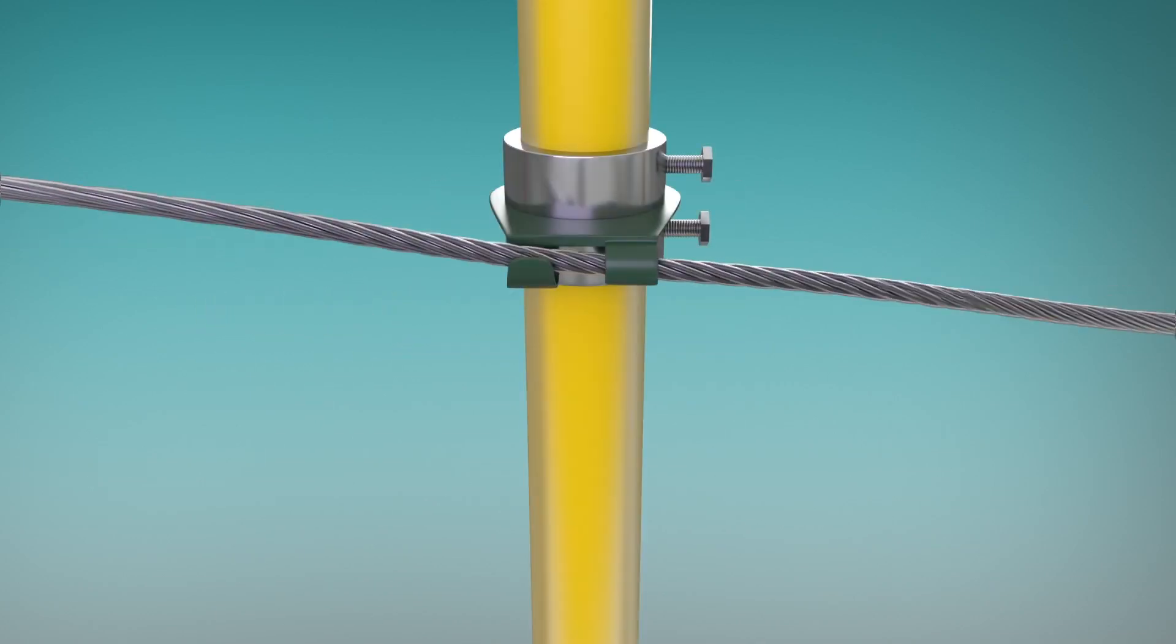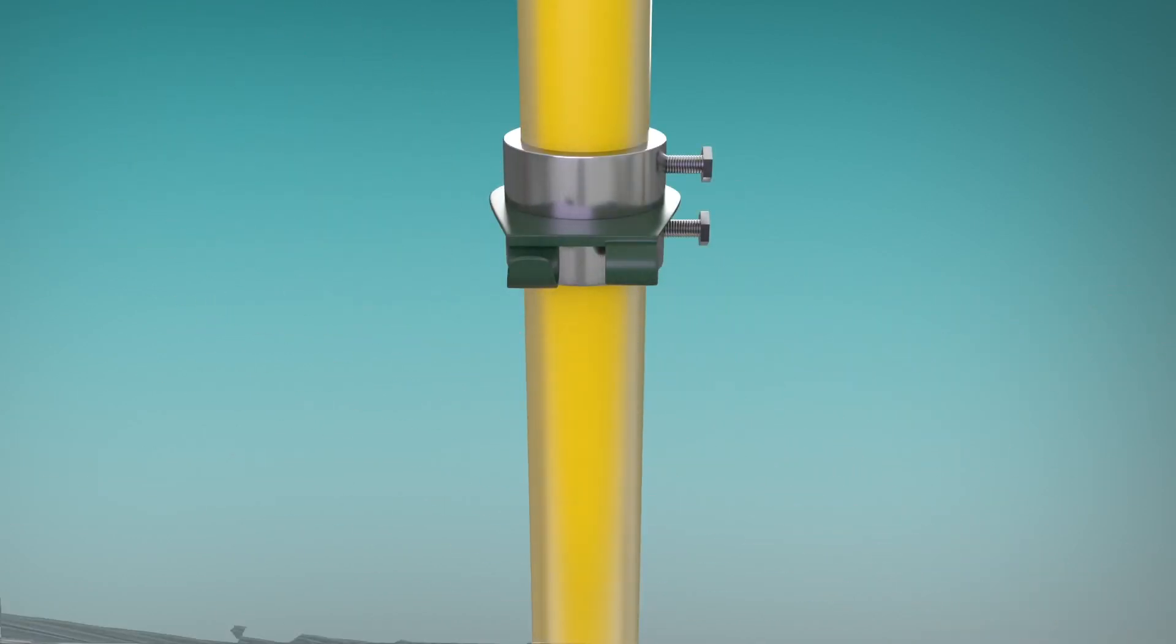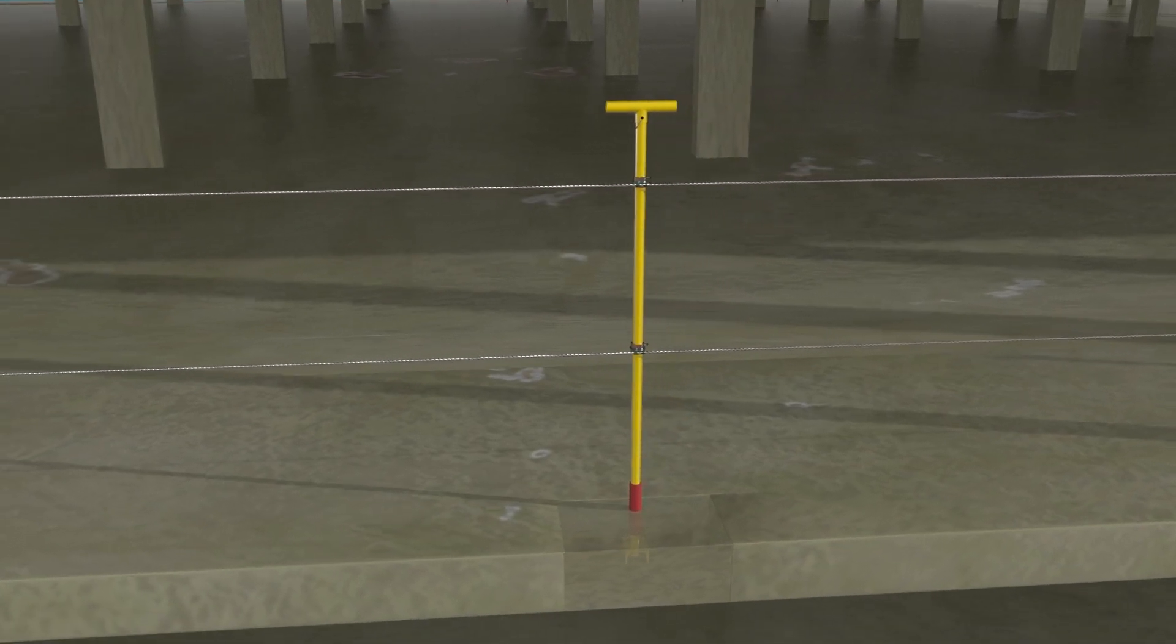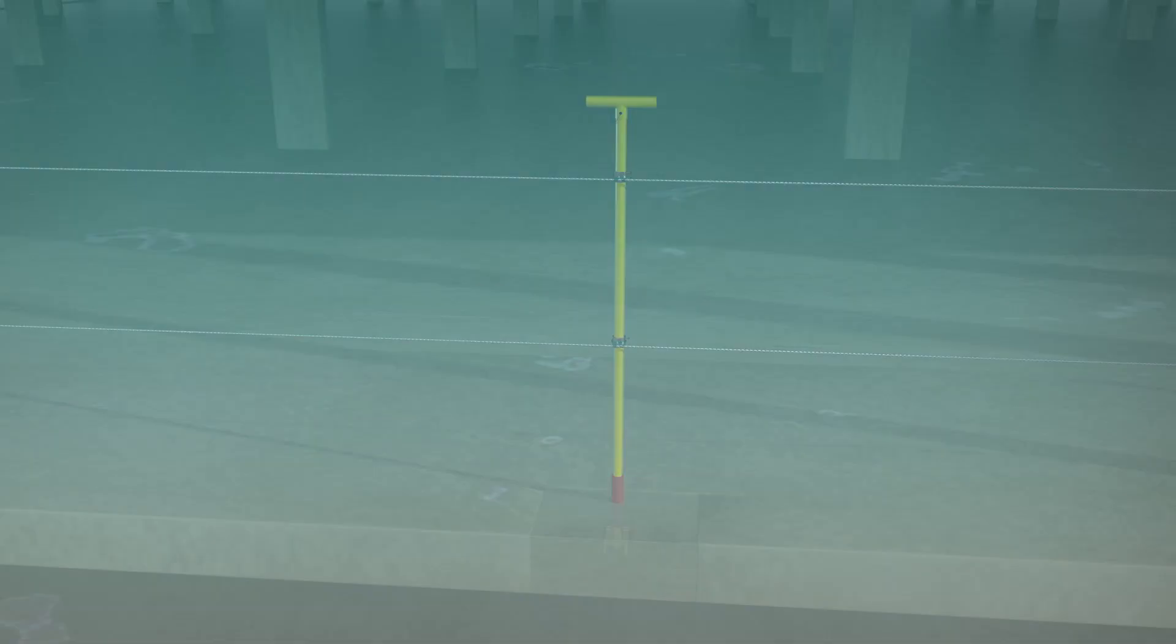To dismantle, remove cable by simply twisting from horizontal to vertical, lifting out of cable holder. Unscrew post.